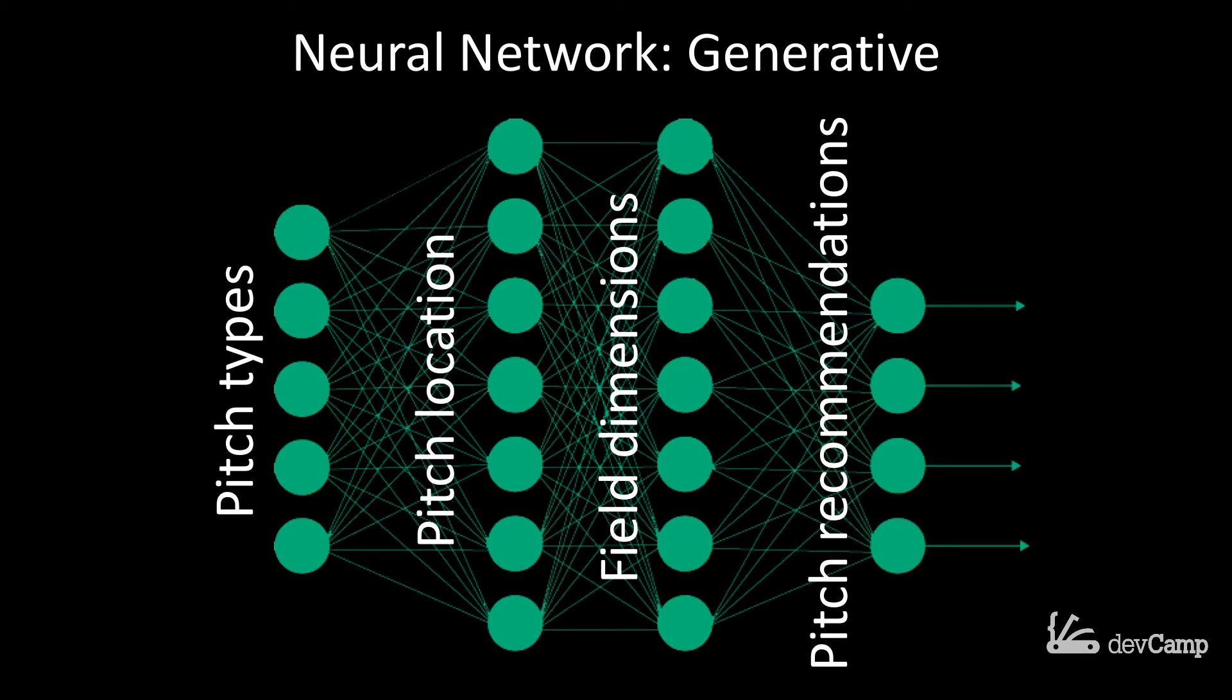That allowed us to create all of these kinds of models such as pitch types, pitch locations, field dimensions, all of these kinds of elements. The way that generative system would work is it would take in all the historical data and then it would build its classes from there, just like in the earlier example where I talked about the handwriting recognition tool.